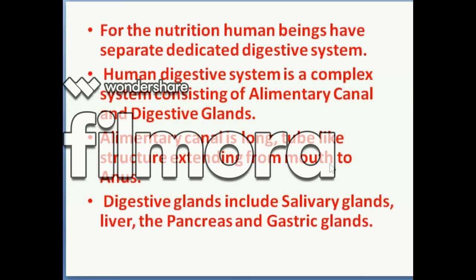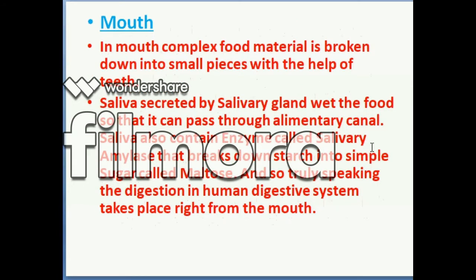The human digestive system is a complex system consisting of the alimentary canal and digestive glands. The alimentary canal is a long tube-like structure extending from mouth to anus. Digestive glands include salivary glands, liver, pancreas, and gastric glands.